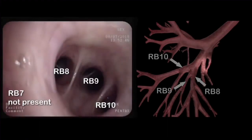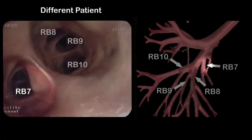In most cases, the medial basal branch or RB7 can be found at the medial side of the lower lobe bronchus. In this patient, however, RB7 is absent. This picture from a different patient shows an example of the medial basal branch or RB7 of the lower lobe.